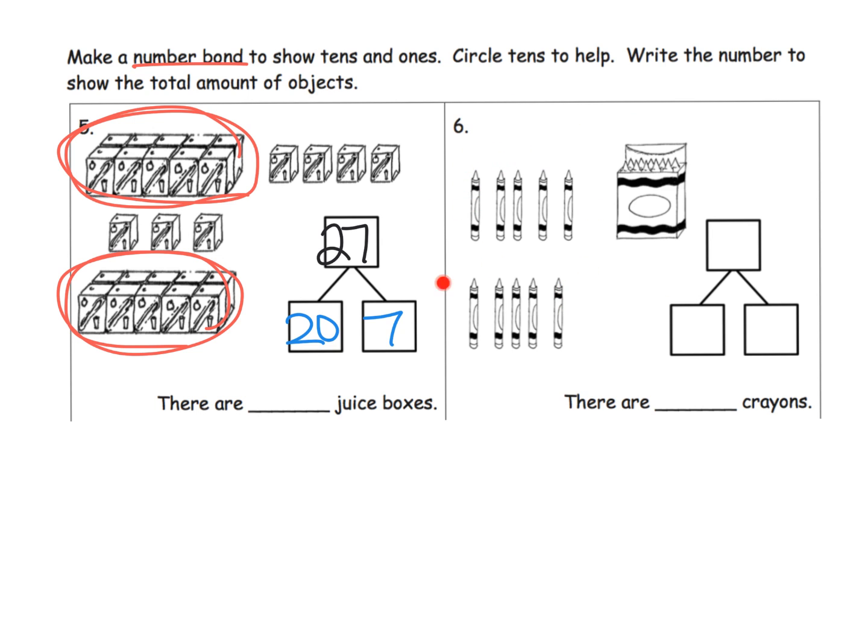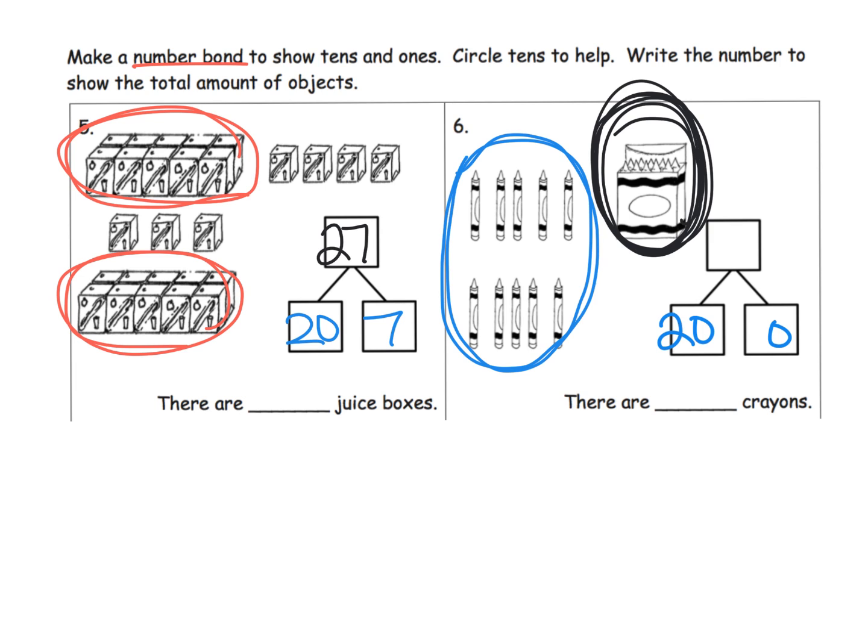Now question six was curious to me—it just seems like there might be a typo. We're going to circle the tens to help. Well, here's one group of 10. But then unlike all of our previous examples, you'll count over here one, two, three, four, five, six, seven, eight, nine, ten. So we have another group of 10. We have 10 and another 10 which is 20. So we really have 20 and nothing in the ones place.